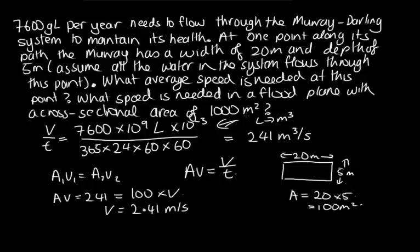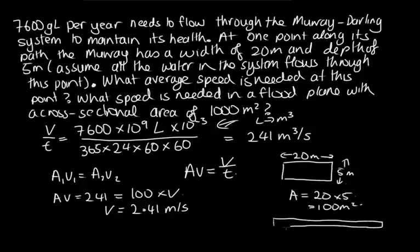It then asks us how fast would it flow if it went into a flood plain with an area of 1,000 metres squared. So that would be a very small flood plain — that could be, say, a kilometre wide and a metre deep — one possible configuration. But in that case, we just use AV again.